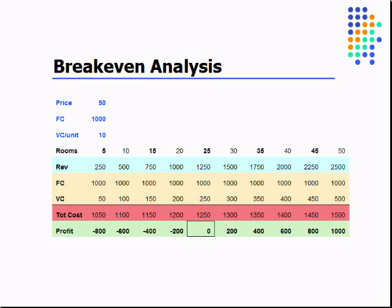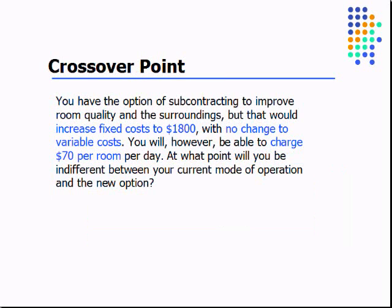So let's jump on down to another concept called crossover point. Now we have an option of improving our hotel. We can subcontract out some of the services and have much higher quality surroundings, but that's going to increase our fixed cost to $1,800.